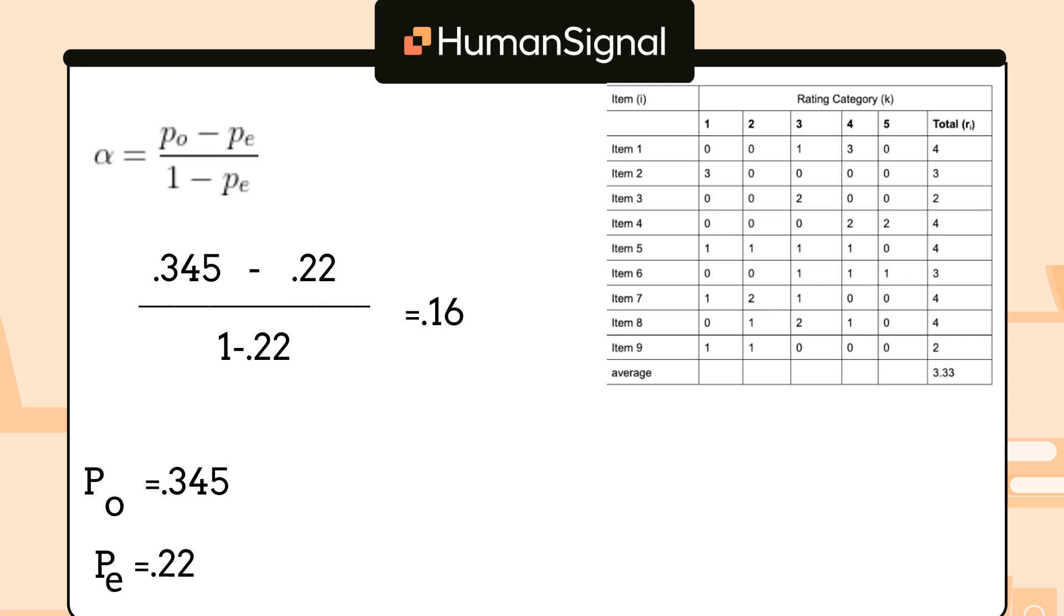Krippendorff's alpha ranges from negative 1 to 1, with 0 being the random chance value. A negative score indicates that the raters disagree systematically. In other words, they probably are looking for different things or use the same facts in a different way. A score of 0.16 indicates fairly low agreement. It's better than chance, for sure, but there's a long way to go in terms of training your annotators.